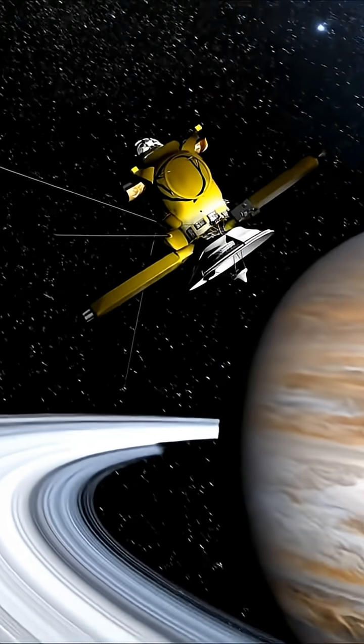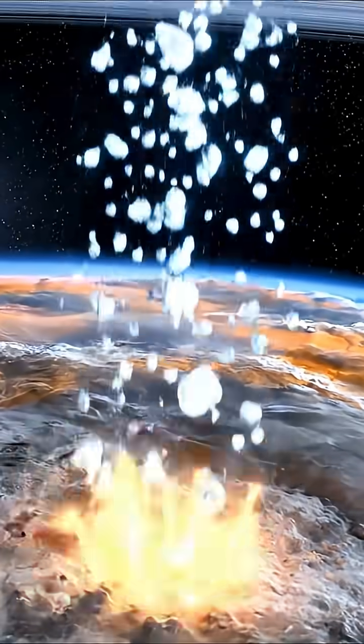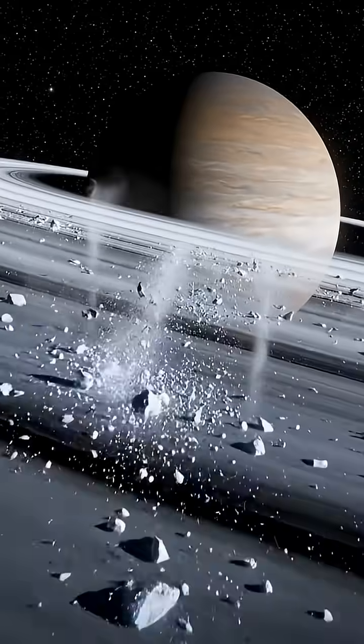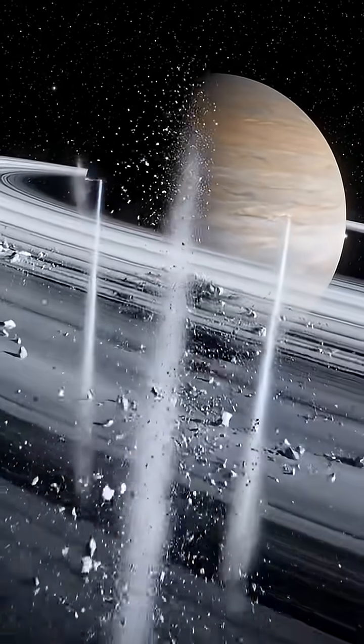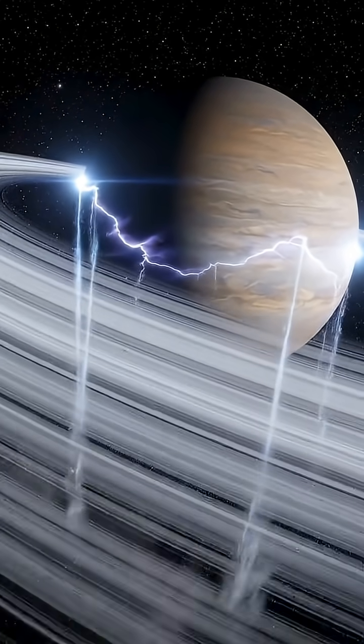Cassini discovered that Saturn's rings are raining ice into the planet, thousands of kilograms every second. Over time, gravity, collisions, and the magnetic field pull the particles in, eroding these iconic rings.